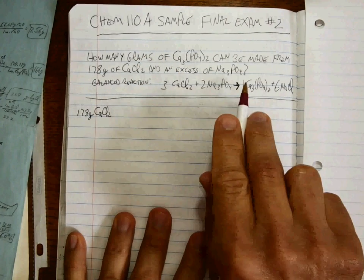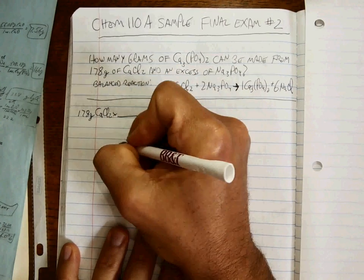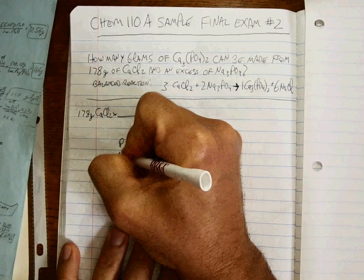Remember this is a mole to mole ratio so we have to get to moles. You know how to do this. We keep doing it, right? Periodic table, molar mass.